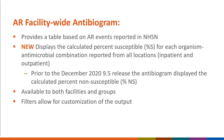The AR FAC-wide antibiogram provides a table based on AR events reported to NHSN. The report displays a summary calculation — the percent susceptible — for each organism-antimicrobial or pathogen-drug combination from all reported locations. This is a change as of the December 2020 release; previously, the antibiogram displayed the calculated percent non-susceptible for each pathogen-drug combination. The antibiogram report is available to both group and facility level users, and the report is modifiable, allowing for customization of the report and its output.